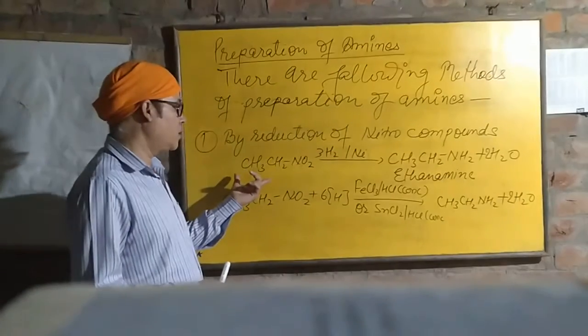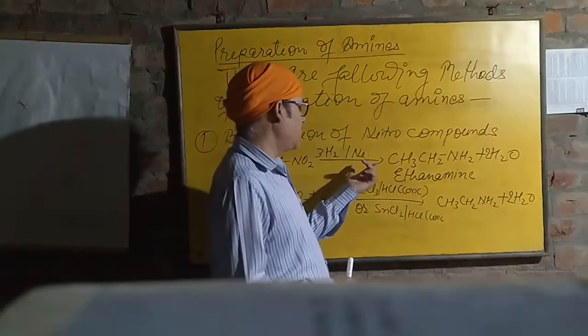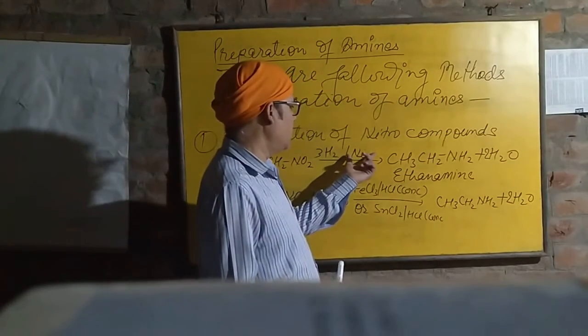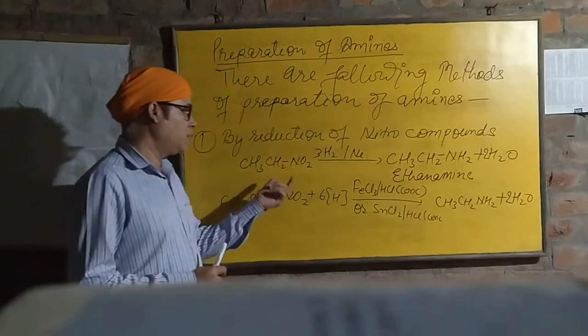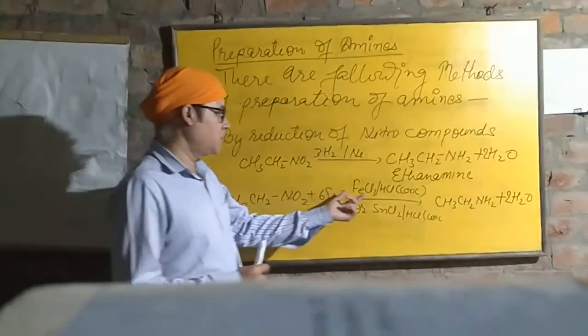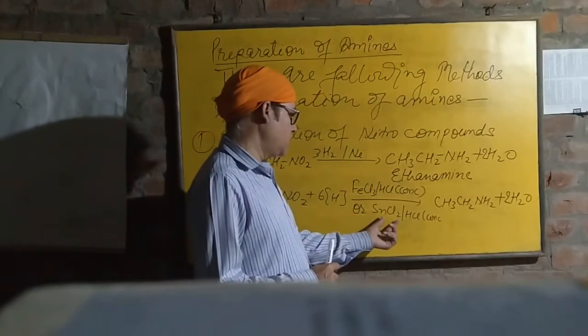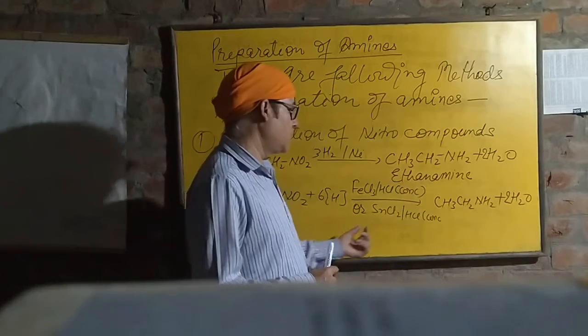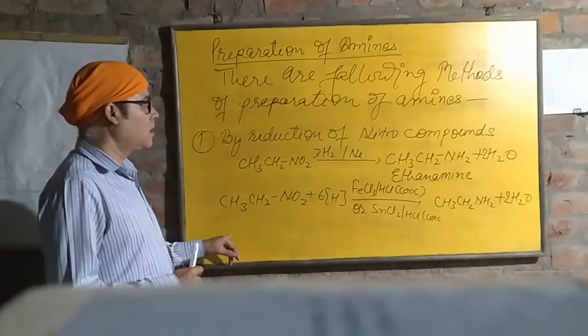We have seen reduction of nitro compound. Simply in an earlier chapter, we studied how platinum, nickel, and palladium have been used for reduction. FeCl3-HCl concentrated, SnCl2-HCl concentrated solution, how can they help in reduction.